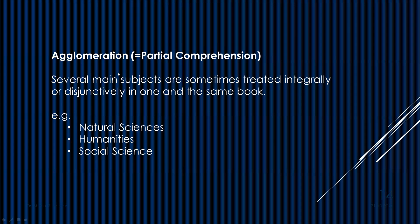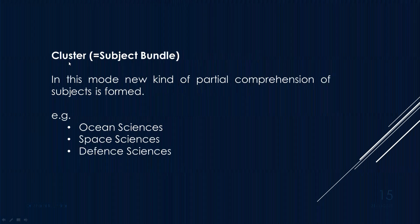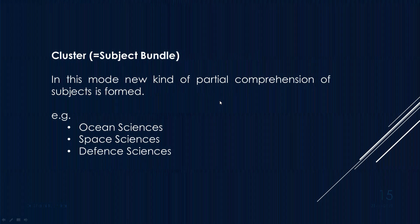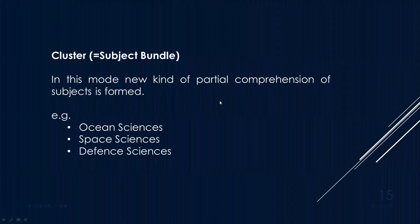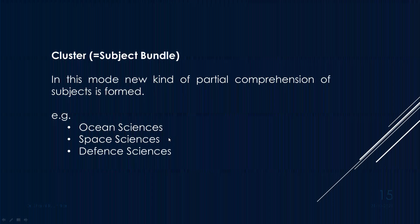Cluster — previously called 'subject bundle' — refers to a new kind of partial comprehension where, for the convenience of organizing research, data is obtained from different basic or compound subjects. Studies of some phenomena are published in one book, and further investigation develops another subject. Examples include ocean sciences and space sciences.